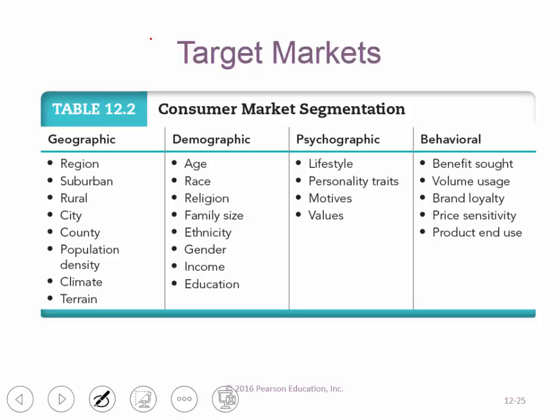When looking at target markets, you can segment by geographic, demographic — age, etc. — psychographic, which includes lifestyle, personality traits, motives, and values, and behavioral — benefits sought, volume usage, brand loyalty, price sensitivity, and product use. Much of this behavioral data can now just be obtained from the fact that someone has already bought a similar product. Income is obviously a big part of that as well.